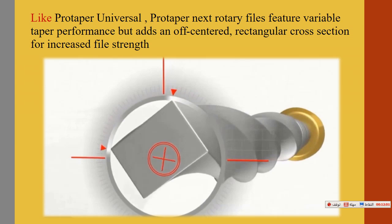The key difference is the cross-section: ProTaper Next has a rectangular cross-section, which reduces stress on the dentine because contact with the dentine wall occurs at only two points, not three as in the previous ProTaper systems. This also provides more space for debris removal.